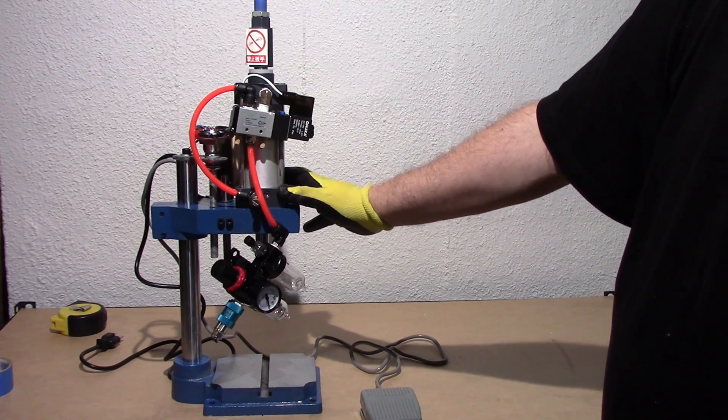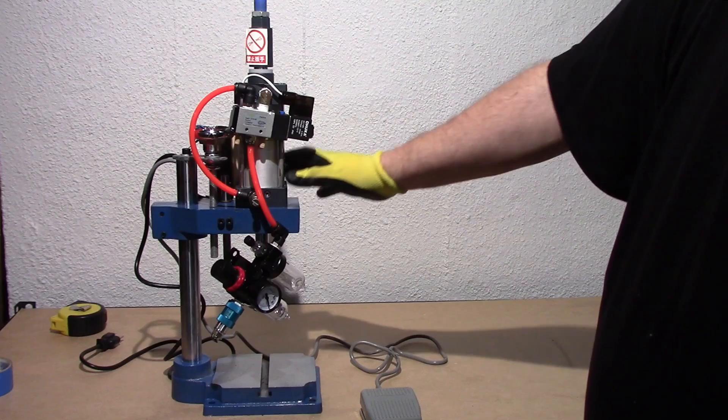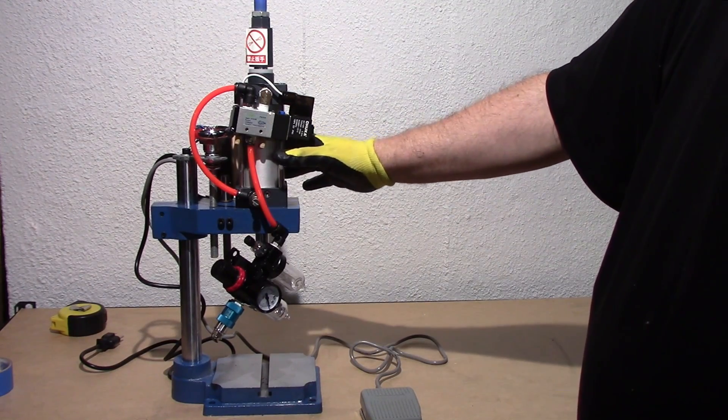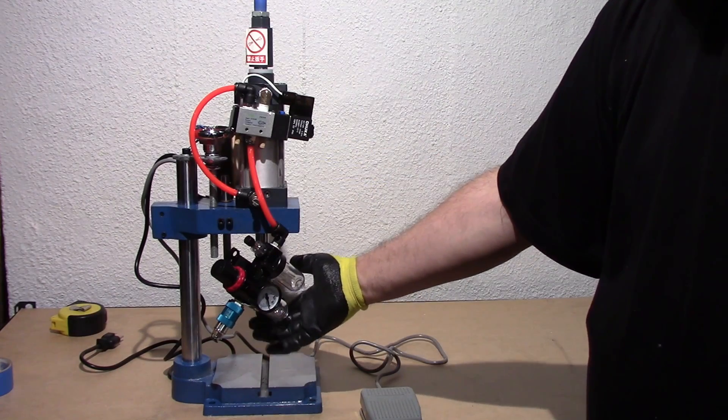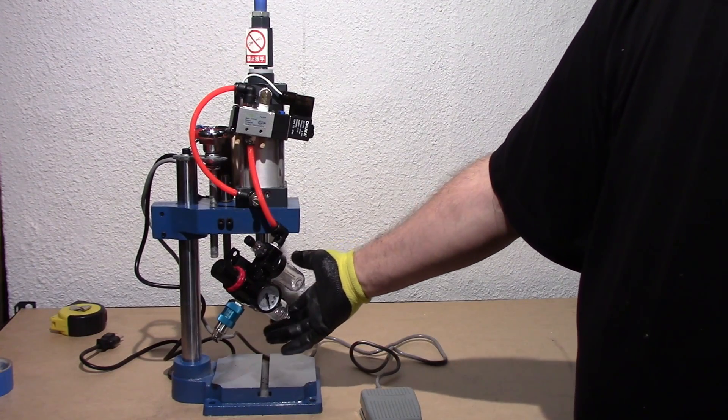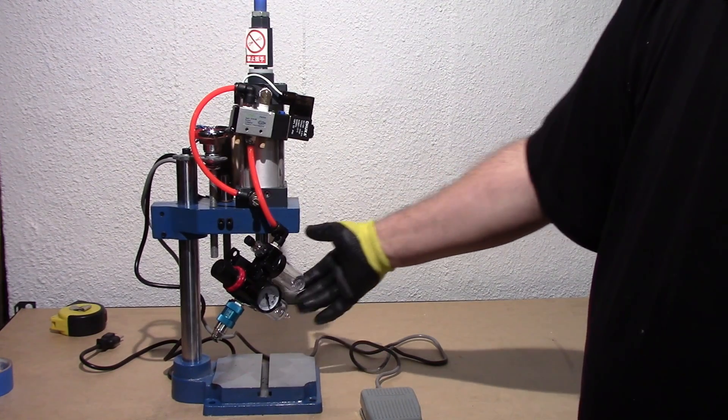But I'll also do a video on connecting this all up to air and how it works, and also building dies for it. So I'll probably use the mini lathe and the CNC to make dies for embossing and other testing purposes.